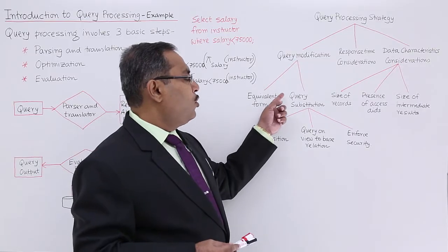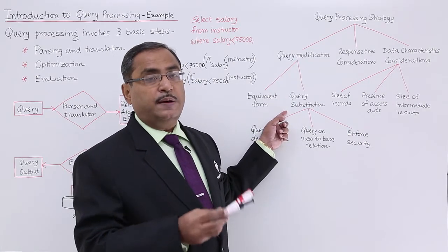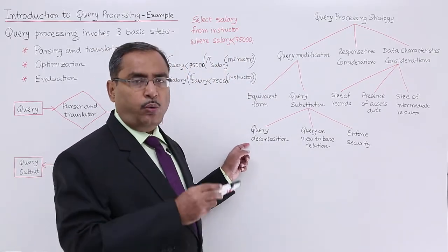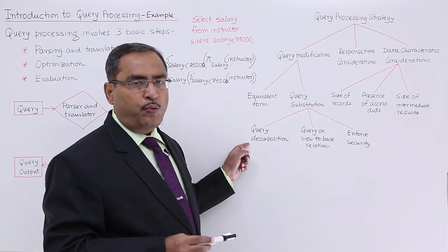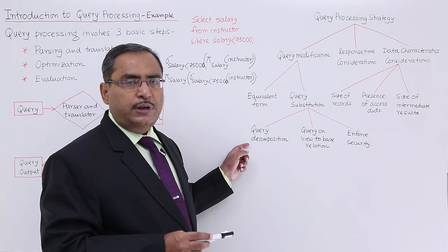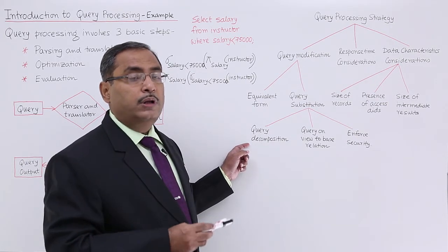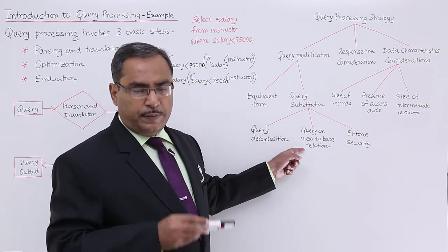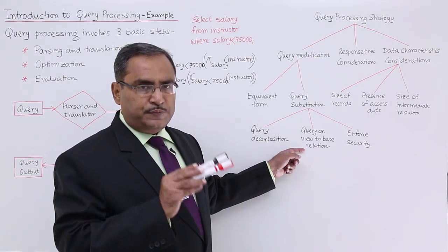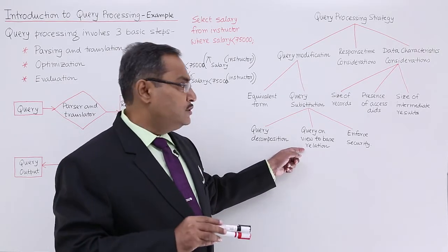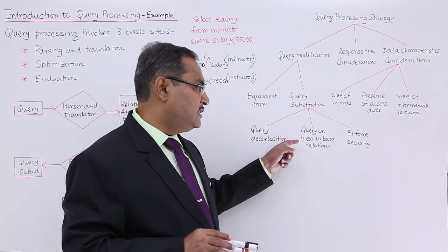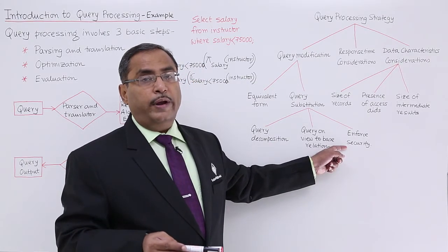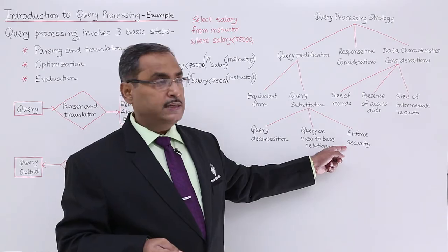Under query modification we have: equivalent form query substitution, meaning one query can be substituted by another query but both will produce the same output. Query decomposition, where the query is decomposed into multiple sub-queries — nested sub-queries have lesser complexity than queries written without sub-queries. Query on view to base relations, meaning through a view we get a subset of the database. And enforced security — checking whether the query execution violates any security measures.